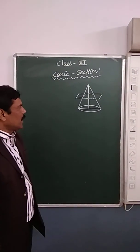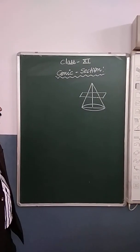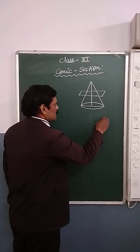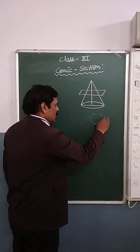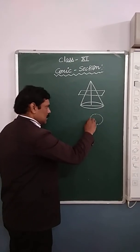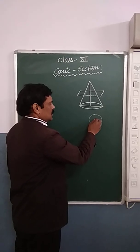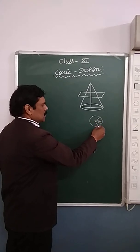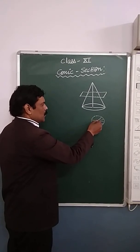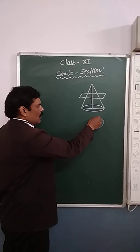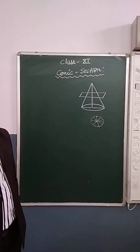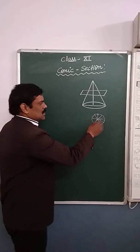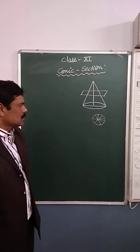You all know how we will define the circle. Circle means a collection of all those points which are equidistant from a fixed point. There are infinite points which lie on its circumference. So a circle is the collection of all those points which are equidistant from a fixed point — that is known as a circle.